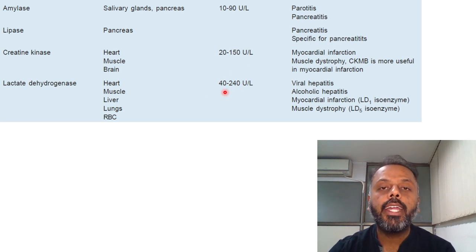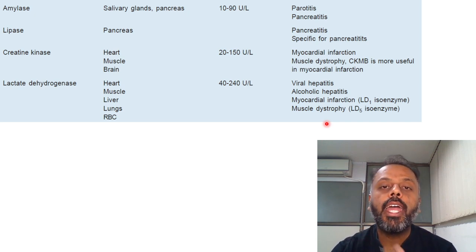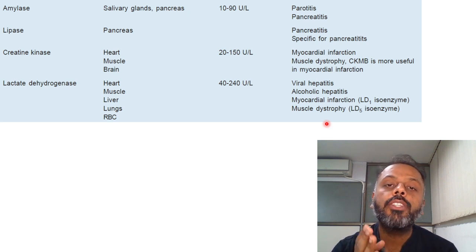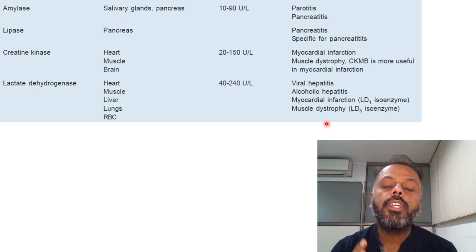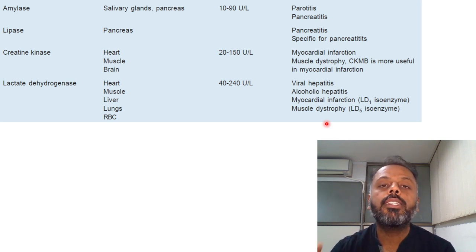LDH levels increase in viral hepatitis, alcoholic hepatitis, myocardial infarction, and muscular dystrophy. Normally, LDH2 is higher in blood than LDH1. LDH2 is found more in RBCs and LDH1 in heart muscle. In myocardial infarction, LDH1 exceeds LDH2 — this is called the flip pattern. LDH concentration is 100 times higher in RBCs than plasma, so even minor hemolysis gives false positive results. Therefore, LDH is no longer commonly used for diagnosing myocardial infarction.